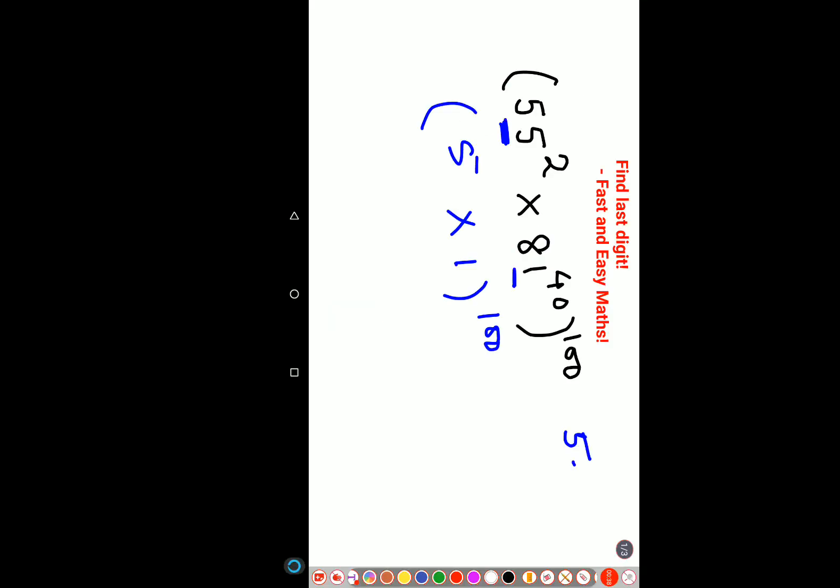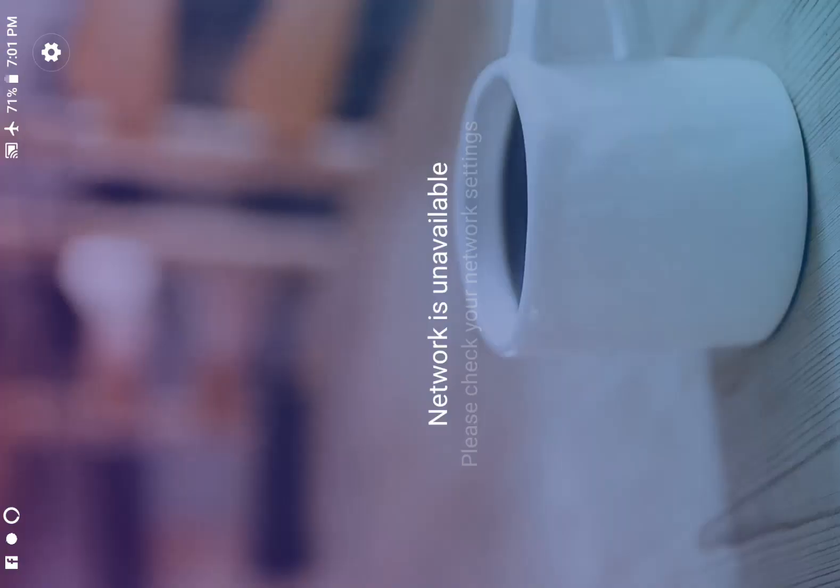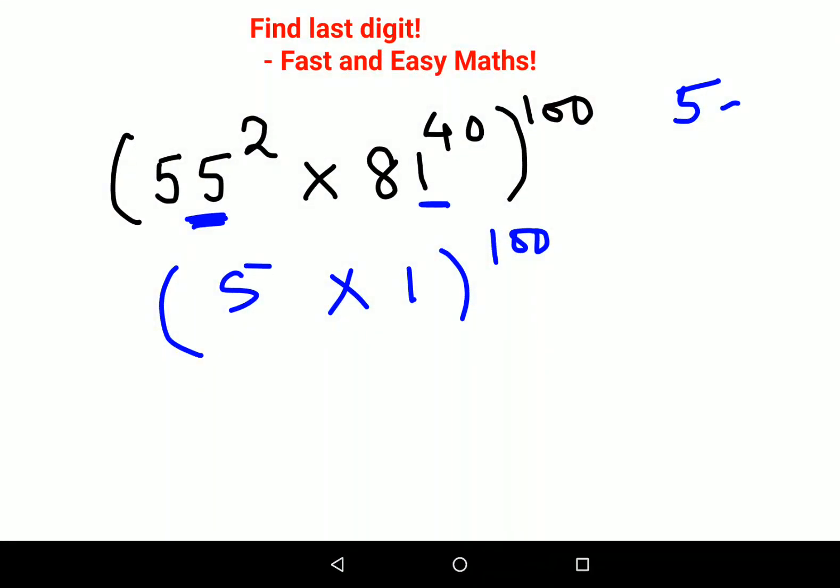5 raised to 2 is 25. 5 raised to 3 is 125. So I can say in all cases the last digit is supposed to be 5. So 5 raised to any power, the final answer will be just 5.